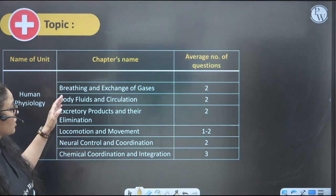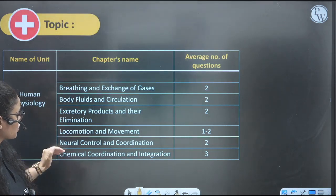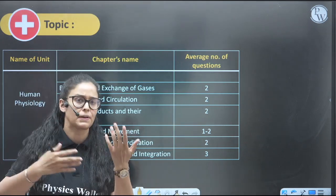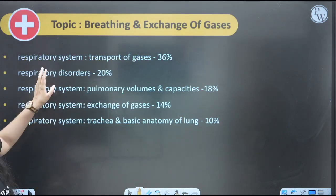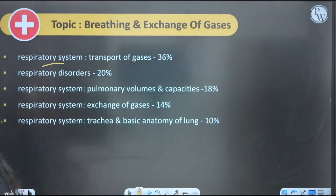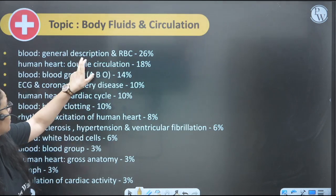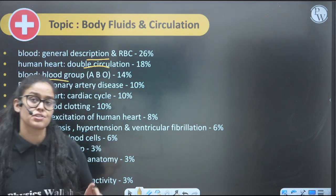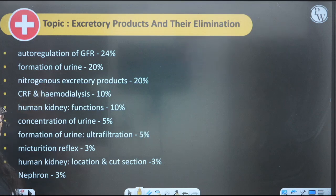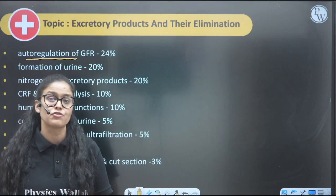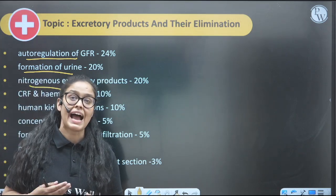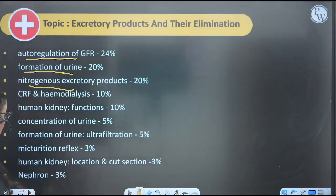Next is Human Physiology. For breathing and gas exchange, body fluids, excretory system, locomotion, neural control, and chemical coordination, the weightage can vary by plus or minus 1–2 questions in coming years. Maximum questions come from the respiratory system — transport of gases, respiratory disorders. For body fluid and circulation, maximum questions are from RBC, double circulation, and blood grouping. For the excretory system, maximum questions come from autoregulation of GFR, formation of urine (20% questions), and nitrogenous excretory products in different animals — a very hot topic.